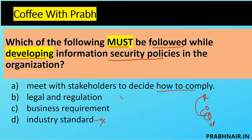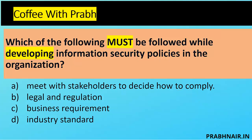We eliminate 'meet with stakeholders to decide how to comply' because they are not in a position to comply - they are in a position to approve; we get input from them. Business requirements are the next best answer after legal regulations. The most important thing is that your policy must at least cover the legal regulations, because those cannot be customized. That's why the answer is B.